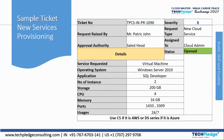Depending on the priority, you need to assign the severity of that ticket. Then there is the field for the person who raised the request, and the request type — what type of request it is, such as a new cloud service or a network service. The approval authority, in this case, is the department head. The ticket is assigned to the cloud admin.